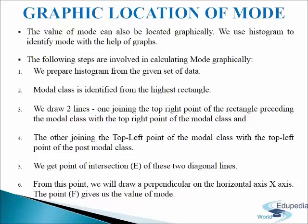Third, we draw two lines: one joining the top right point of the rectangle preceding the modal class with the top right point of the modal class. And fourth, the other line joining the top left point of the modal class with the top left point of the post-modal class. Next, we get a point of intersection, that is point E, of these two diagonal lines. From this point E we draw a perpendicular on the horizontal axis — the X axis — and the point F gives us the value of mode.